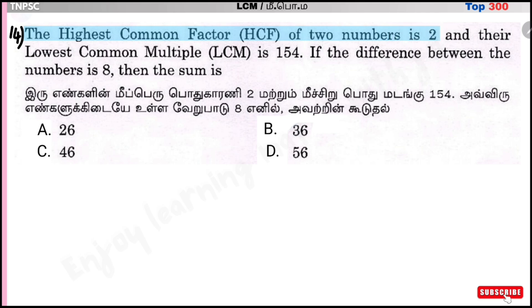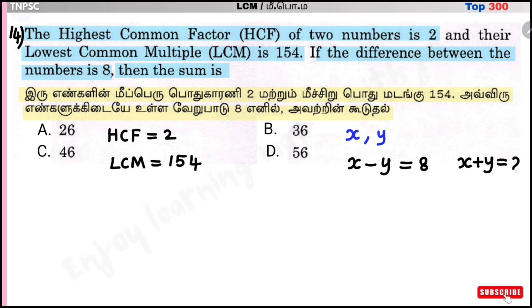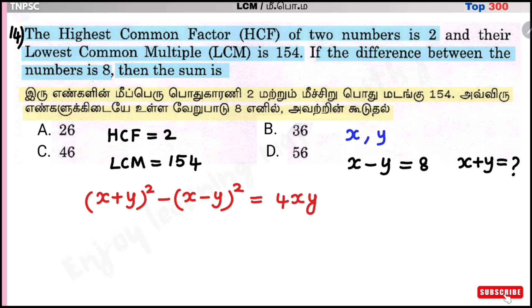Question number 14: The highest common factor of two numbers is 2 and their lowest common multiple is 154. If the difference between the numbers is 8, find the sum. Using the formula: (x+y)²-(x-y)²=4xy.